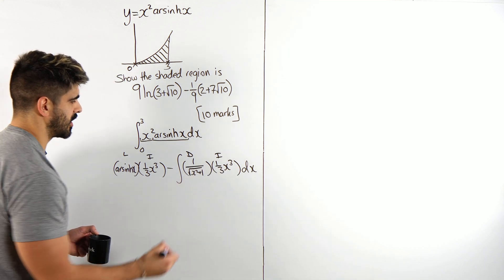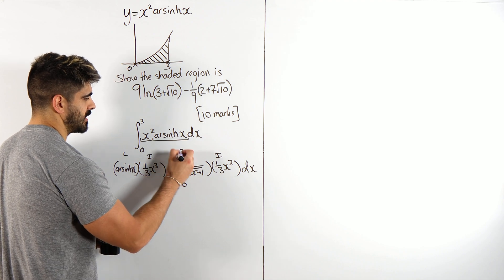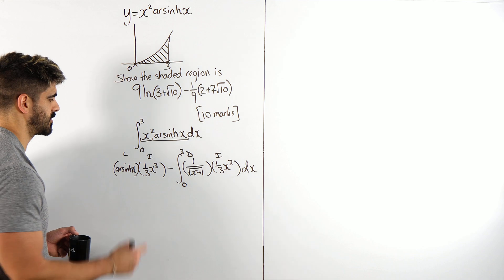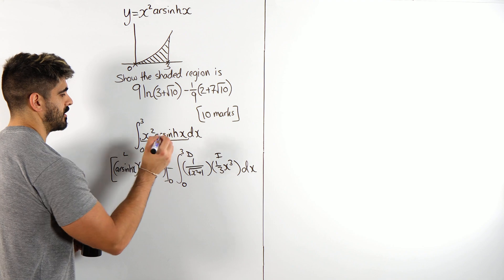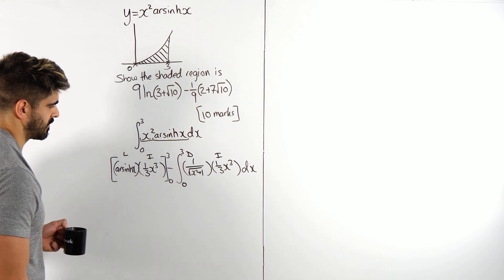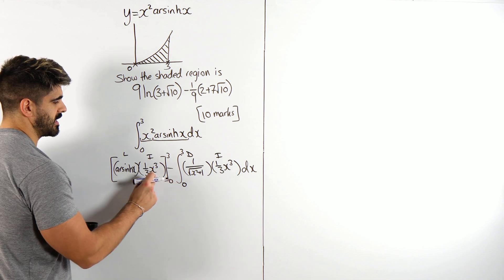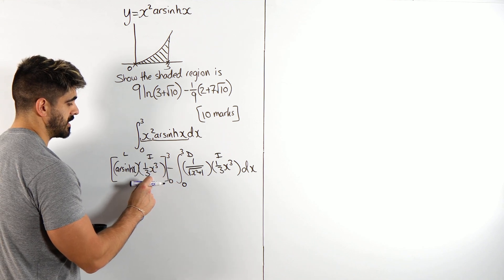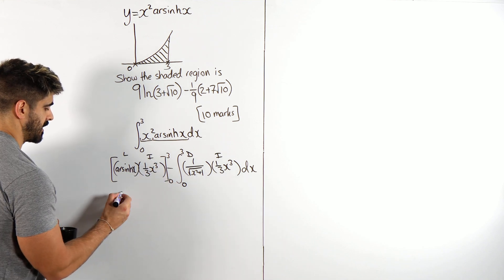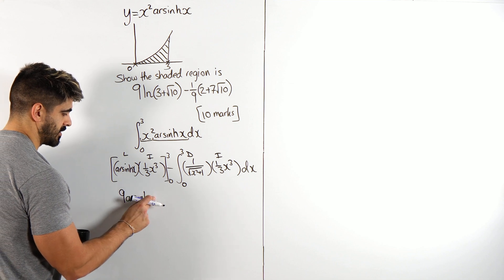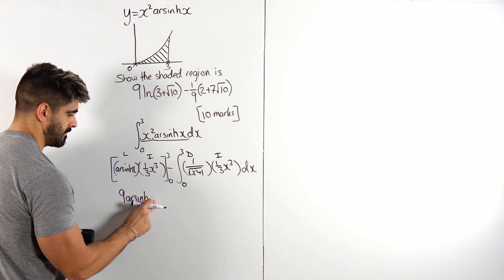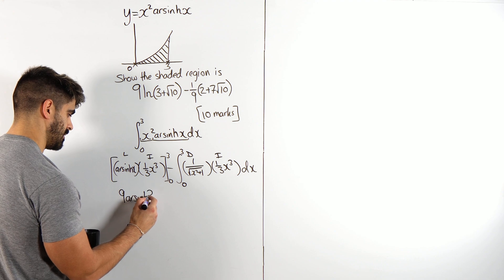Now, one thing we can start doing here is we can start distributing these limits at the same time. So, this, I can start evaluating this at 0 and 3. Maybe it would be nice for us to do that, right? Because if I sub in 3 here, I get 3 cubed over 3, which is 9. I get 9 arshine, not X, 3, isn't it? Because I've subbed in 3.